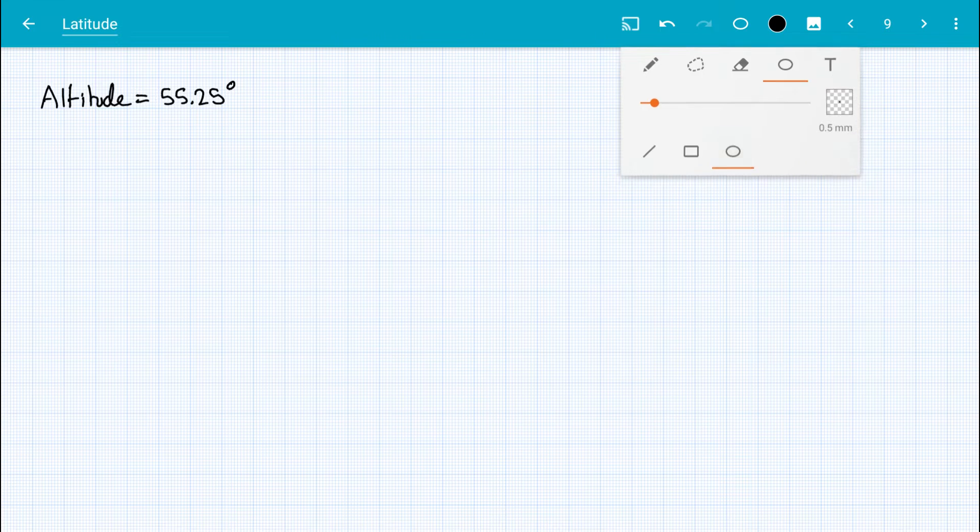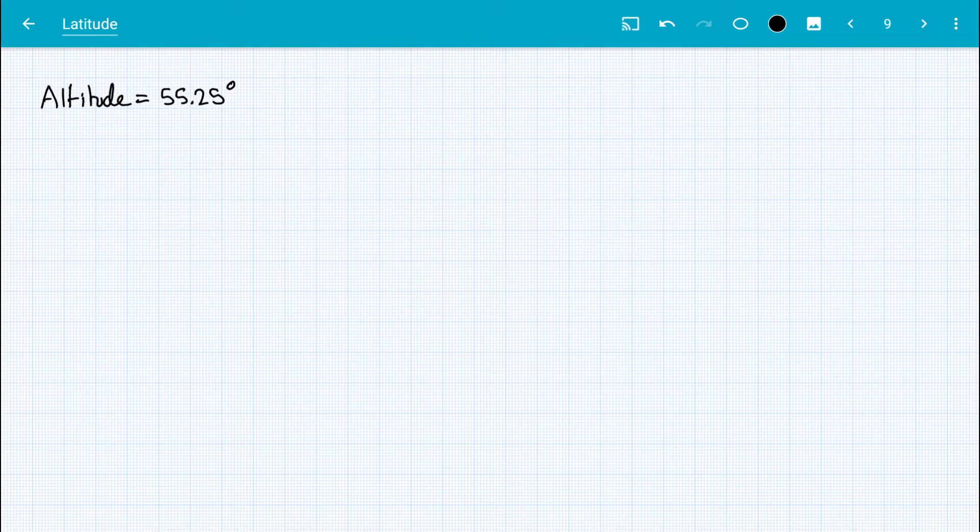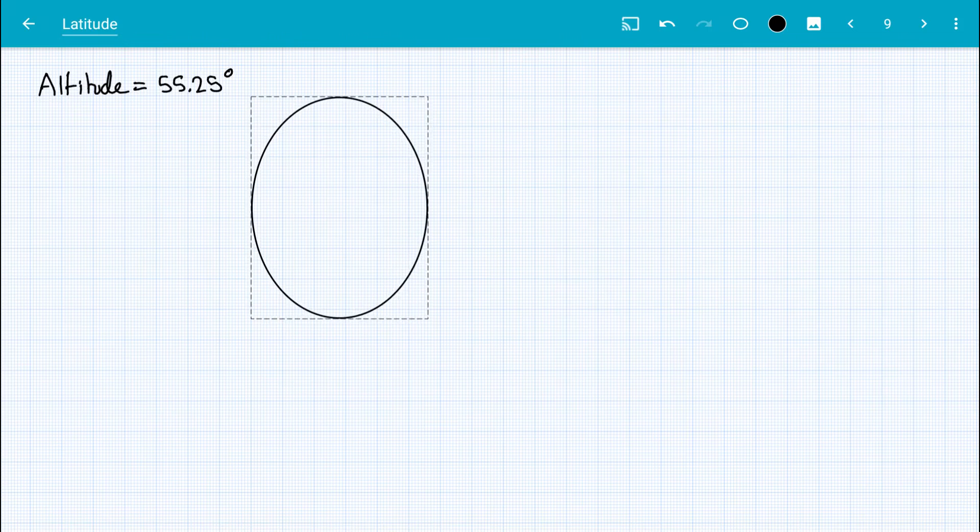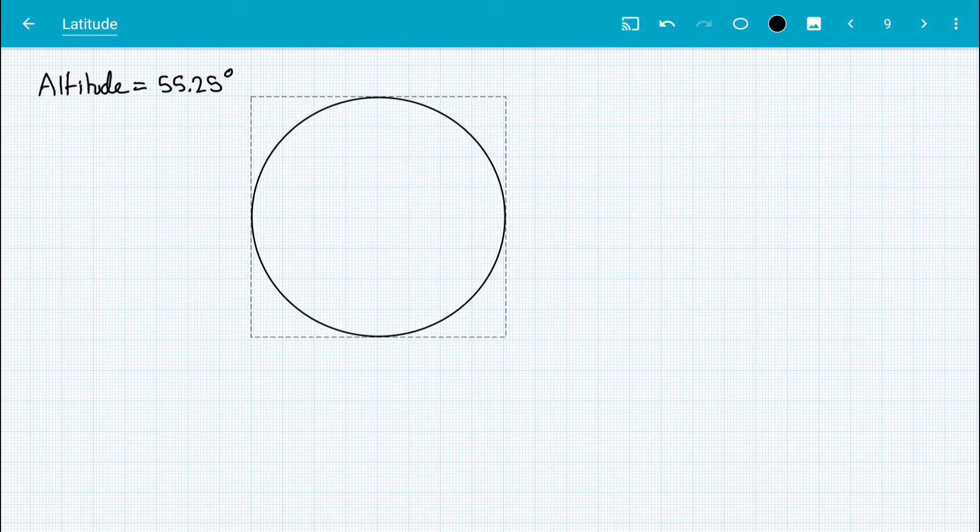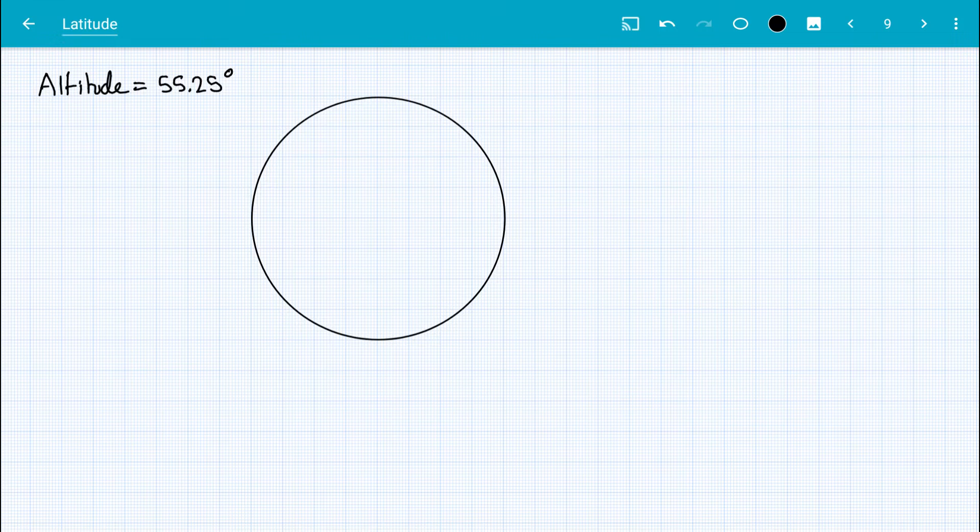Now I'd advise against just reaching for formulas and trying to plug numbers in because you don't know what the numbers are. What I would recommend you do is draw a diagram. Start by drawing a picture of the earth like this, and then we can start labeling things on that diagram.